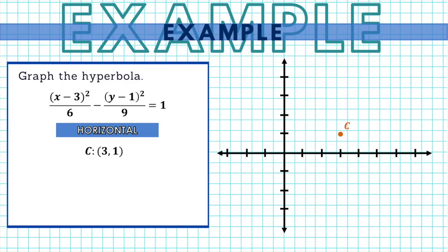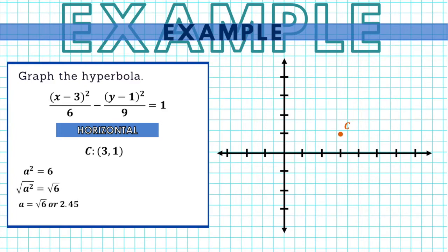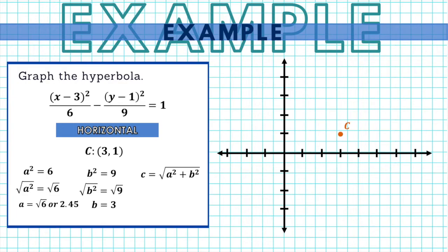Next, let's identify a, b, and c. Since a squared is the denominator of the positive term, a squared equals 6, so a equals the square root of 6, or approximately 2.45. For b squared, it is the denominator of the negative term, so b squared equals 9, giving us b equals 3. To determine c, we use c equals the square root of a squared plus b squared. Substituting, c equals the square root of 6 plus 9, which equals the square root of 15, or approximately 3.87.